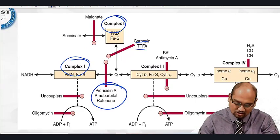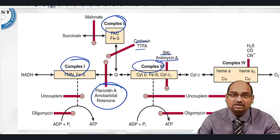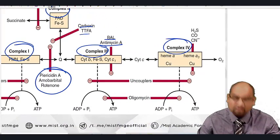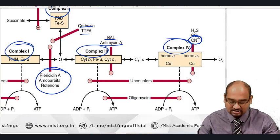Complex three inhibitors are antimycin A and BAL—BAL stands for British Anti-Lewisite. Coming to the complex four inhibitors, beta, that was asked in the exam: cyanide was one of the options and that is the answer to that question.